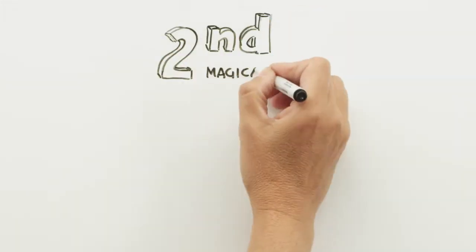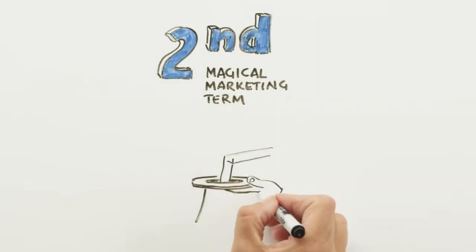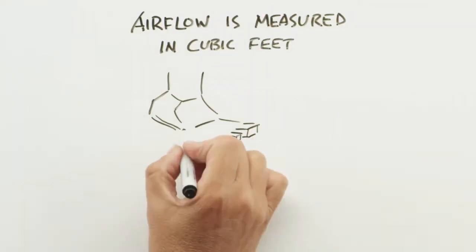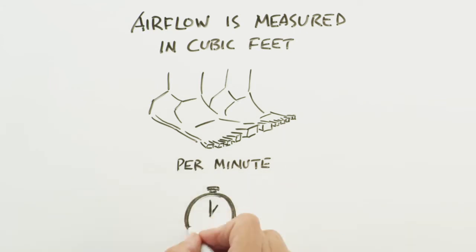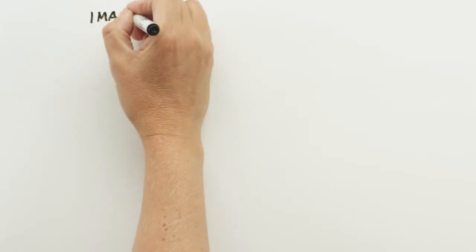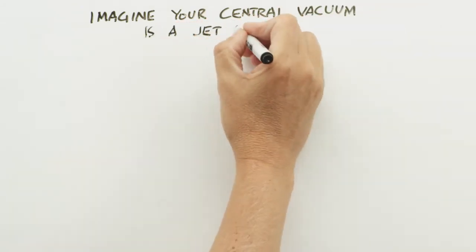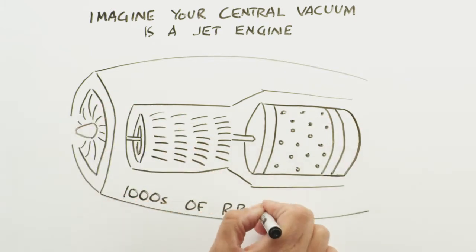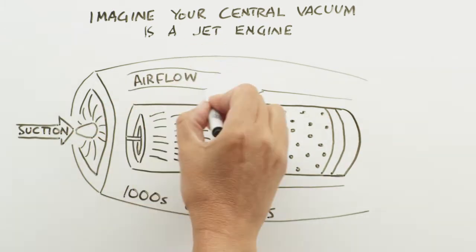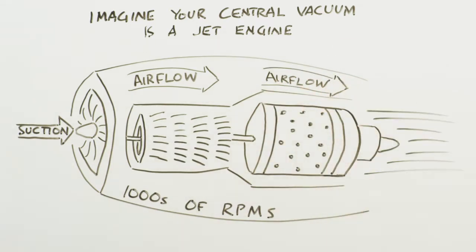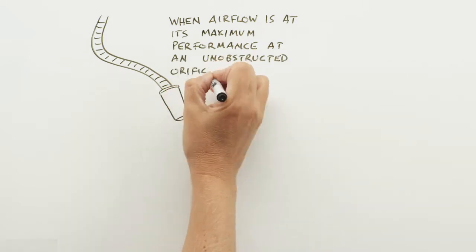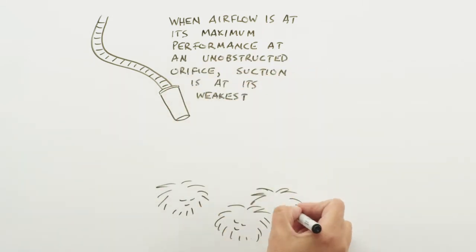The second magic marketing term that vacuum salespeople use to measure performance is air flow. Air flow is measured in cubic feet per minute. This measurement tells how much air the central vacuum motor can move. Imagine your central vacuum motor is like a jet engine. Turbine propellers are spinning at thousands of revolutions per minute, generating tremendous suction and producing a huge amount of air flow which is then exhausted. A central vacuum motor operates along the same principle. When air flow is at its maximum performance at an open, unobstructed orifice, suction is at its weakest.